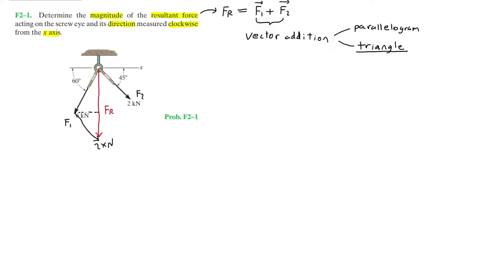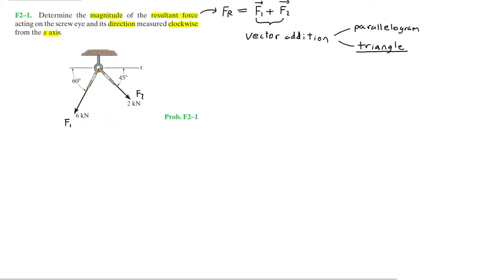If we split this triangle into two triangles, we form two right triangles. This angle is equal to 60 degrees since it's an alternate interior angle. Now since FR is at an angle of 45 degrees from the x-axis, this angle is 45 degrees as well. Since it's looking a little messy, I'll redraw the triangle next to the diagram — here we have the 6 kilonewton force at an angle of 60 degrees from the x-axis, measured counterclockwise.